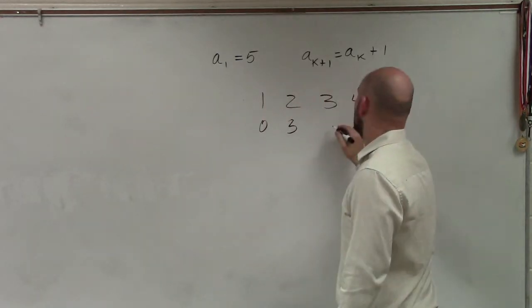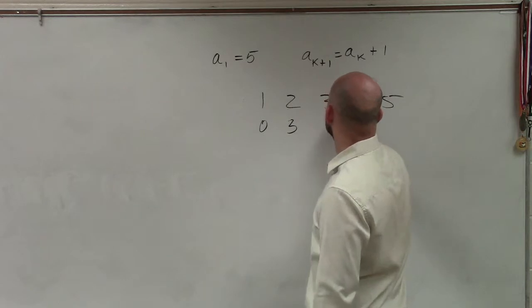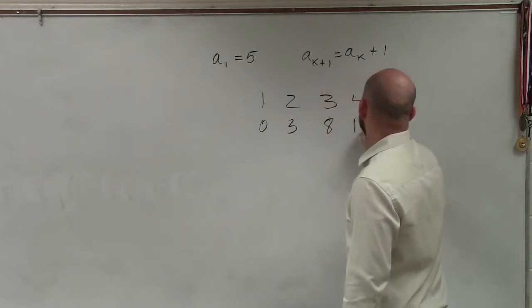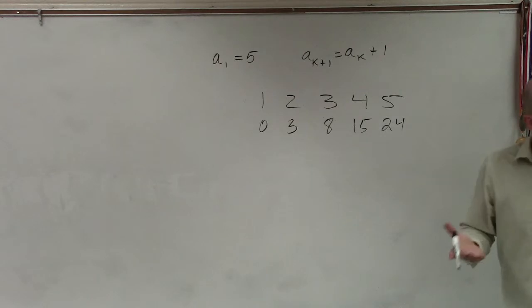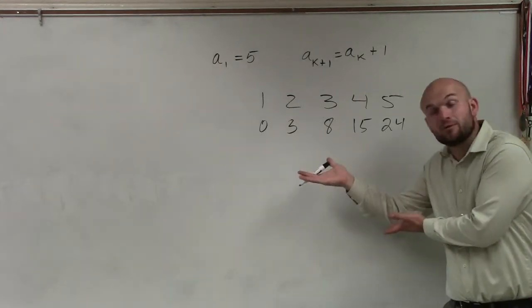Where it could be 3, let's see, that'd be 8, 15, 24. And we came up with a rule, and then sometimes we had to decide what that rule was.